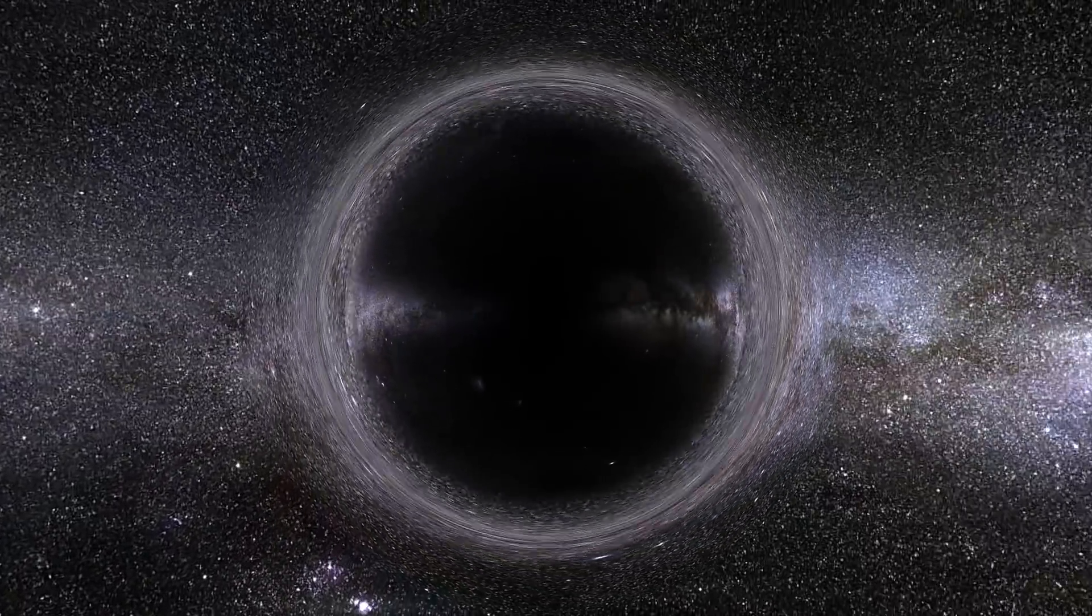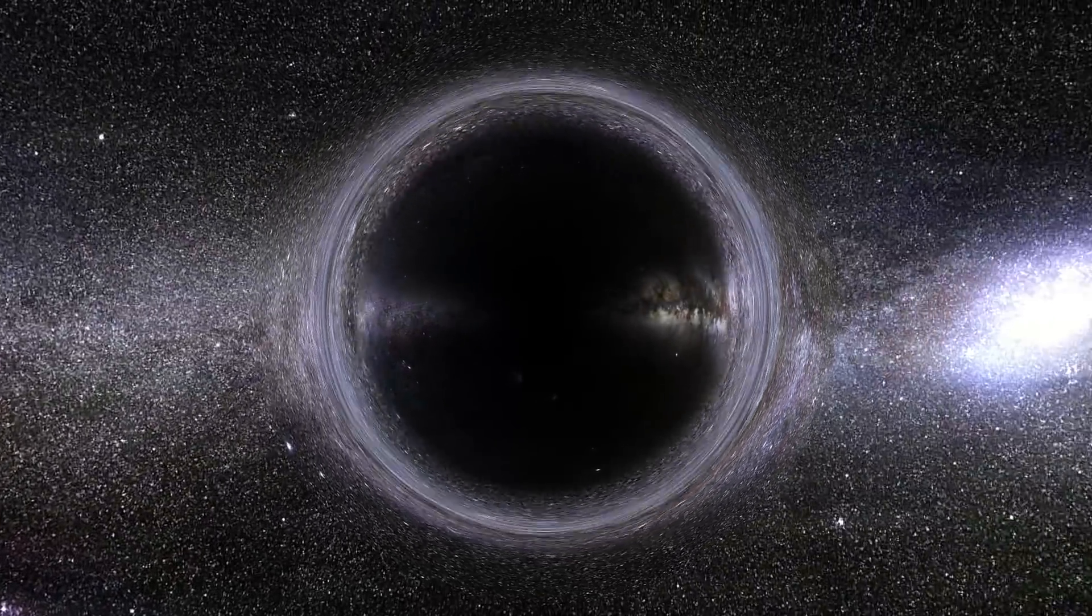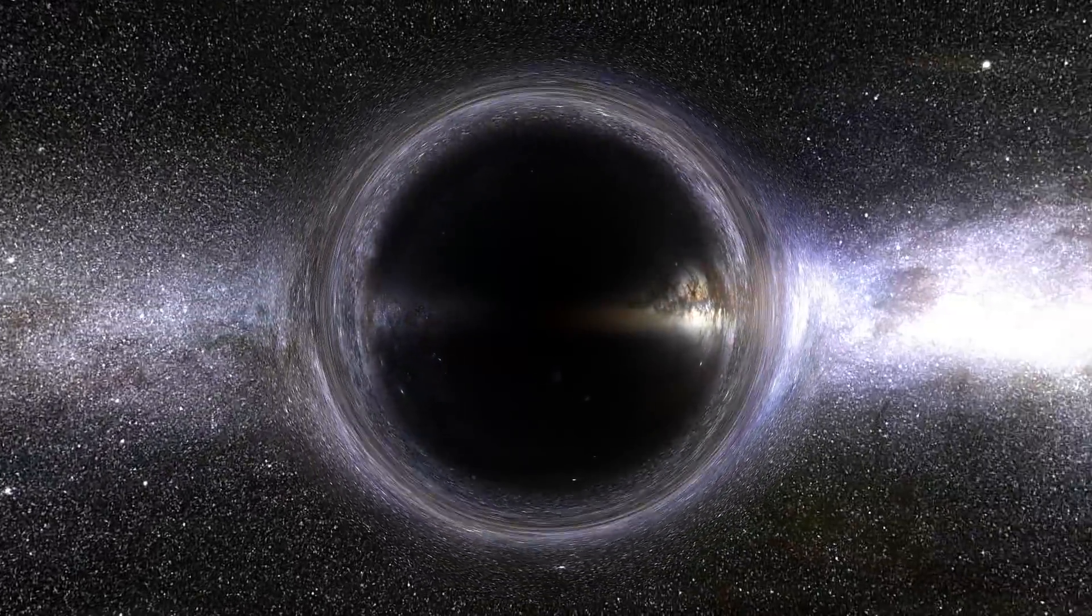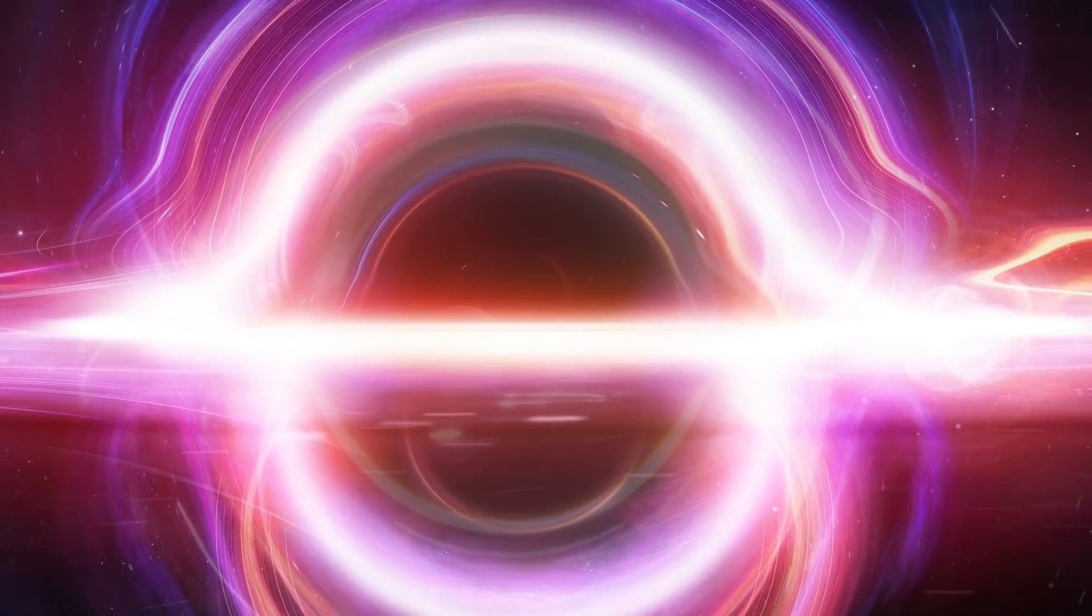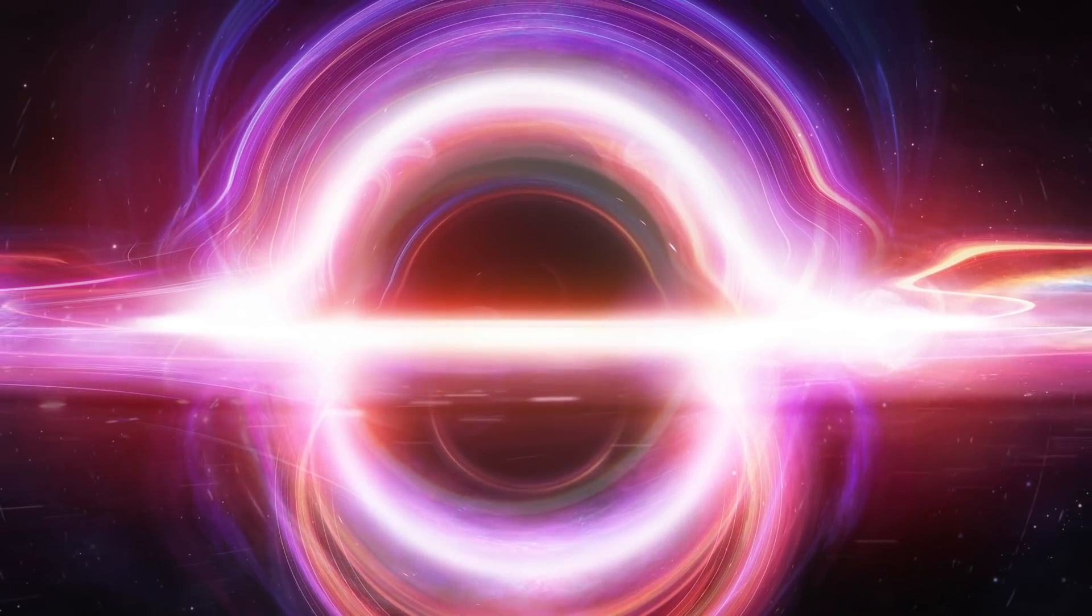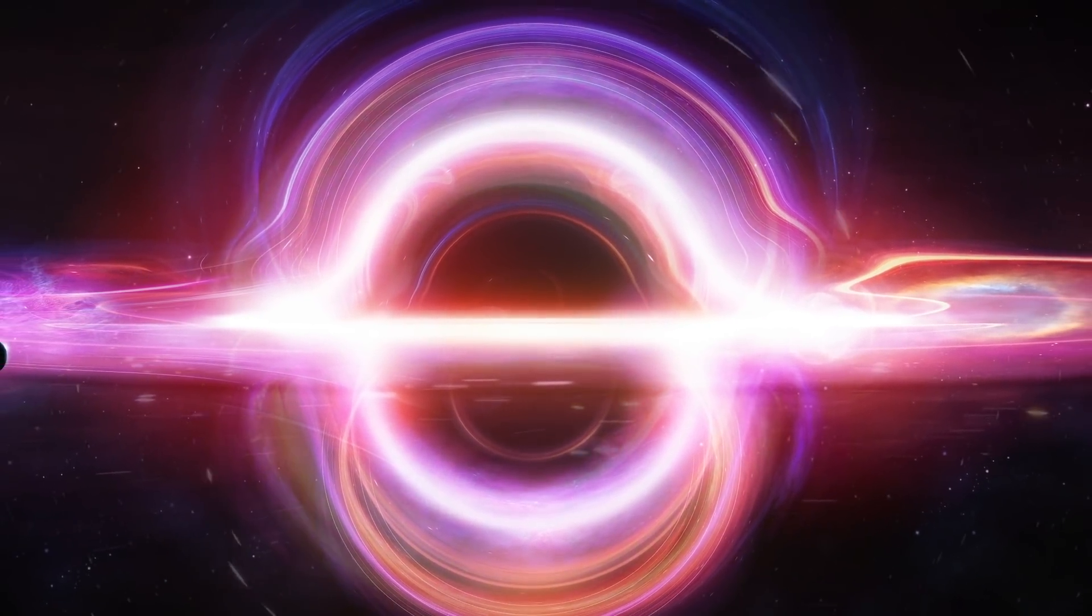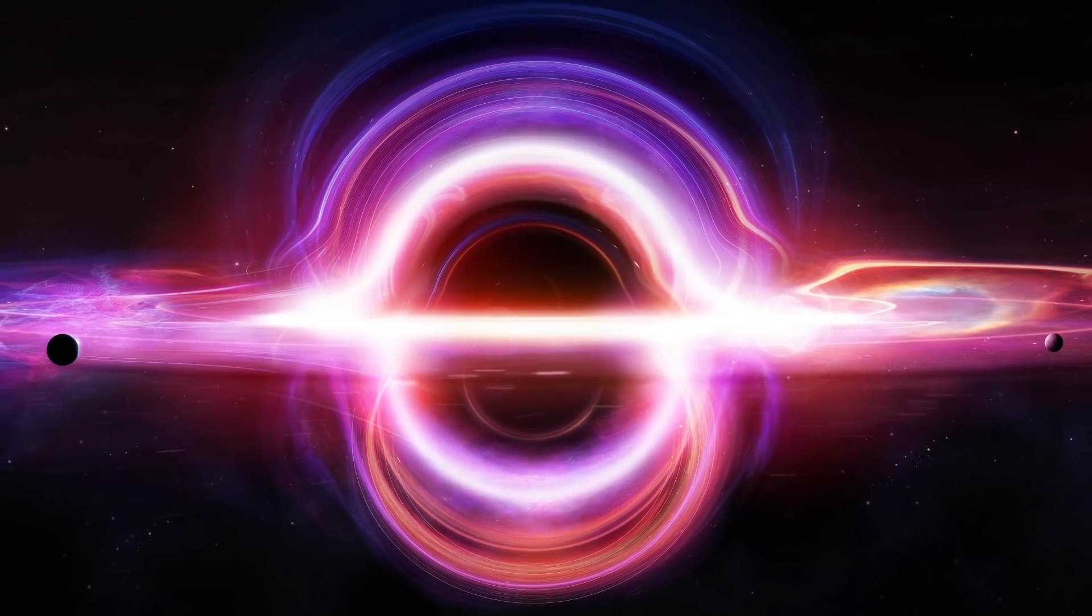However, a minority of relativists continued to contend that black holes were physical objects. By the end of the 1960s, they had persuaded the majority of researchers in the field that there is no obstacle to the formation of an event horizon, a boundary in space-time through which matter and light can pass only inwards towards the mass of the black hole. Nothing, not even light, can escape from inside the event horizon.